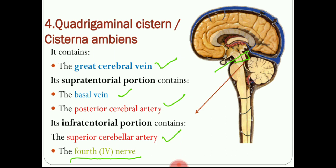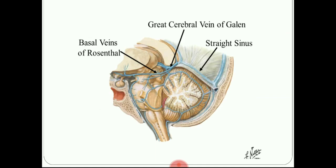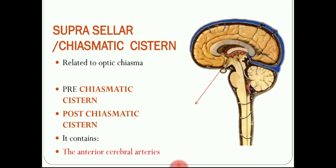In the image, the basal vein joins to form the great cerebral vein, which drains into the straight sinus located between the occipital lobe and the upper surface of the cerebellum. The region right above the pituitary gland is the sella turcica, and the cistern located here is known as the suprasellar or chiasmatic cistern, which is related to the optic chiasma. It is divided into pre-chiasmatic and post-chiasmatic portions based on their relation to the optic chiasma.